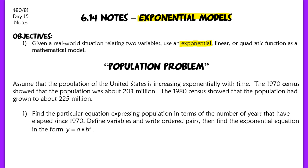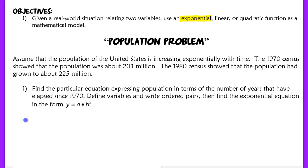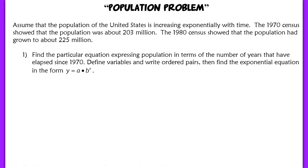Our objective for today is to be given a real-world situation and use an exponential function to model that mathematical scenario. Here we've got our population problem. Assume that the population of the United States is increasing exponentially with time. The 1970 census showed 203 million people. The 1980 census showed the population had grown to 225 million. We're going to find our particular equation by expressing population in terms of the number of years that have elapsed since 1970. We'll write down our ordered pairs and find an exponential equation in the form y equals a times b to the x.